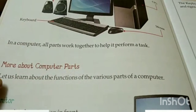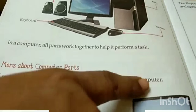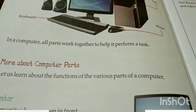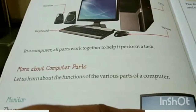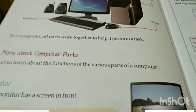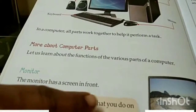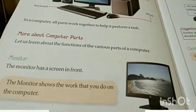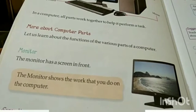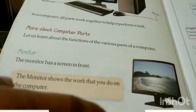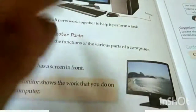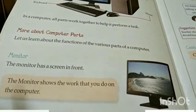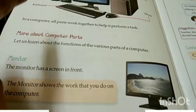More about computer parts - let us learn about the functions of the various parts of a computer. Ab hum dekhte hain iske various parts hain, unke baare mein padhenge. Monitor - the monitor has a screen in front. Ismein saamne screen hoti hai jaise TV mein screen hoti hai. The monitor shows the work that you do on the computer - jo kuch bhi hum type karte hain ya jo kuch bhi hum kaam karte hain, wo monitor ki screen pe dikhta hai. Suggestion: always wipe the monitor with a soft and dry cloth - kabhi bhi geele kapde se ya rough kapde se clean nahin karna.